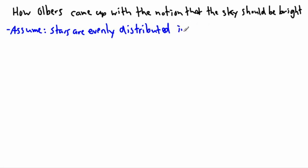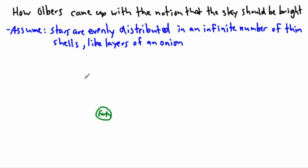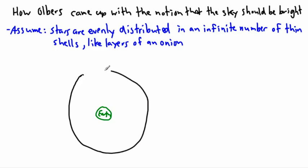We're going to assume that there's an infinite number of thin shells — kind of like the layers of an onion. We'll deal with one shell first and then see what happens when we include all of them. So let's draw the Earth here, and what we're going to do is look out and look at a shell — a three-dimensional sphere.